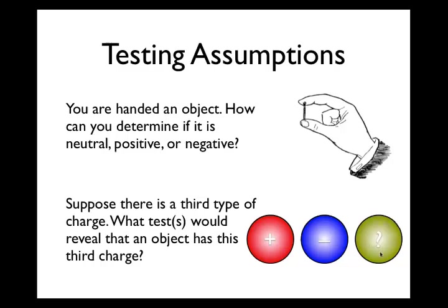For example, if I took this unknown green sphere and brought it near a positively charged red sphere and noticed it was attracted, but then brought it next to a negatively charged blue sphere and it was also attracted to the negative blue sphere — that would be different from what something known positive or known negative would do. Or if it happened to be repelled from both the positive and the negative, that would again be a different property. It turns out that at least in the latter case — repelled from things that are both positive and negative — we've never found anything that does that.